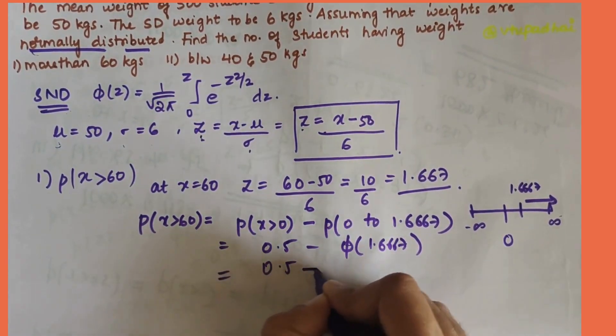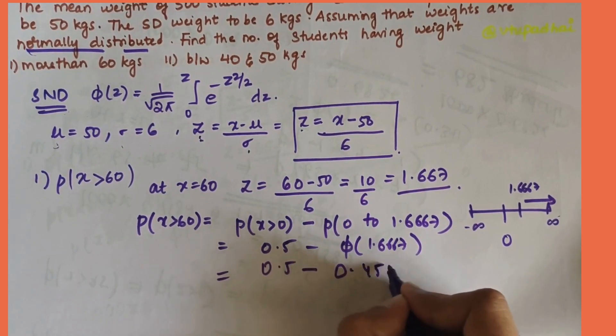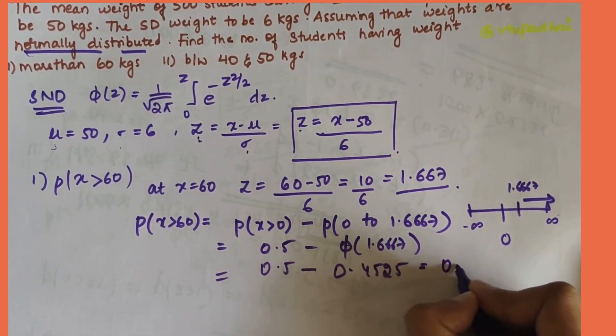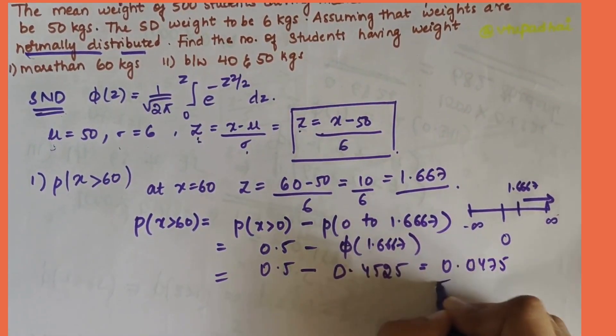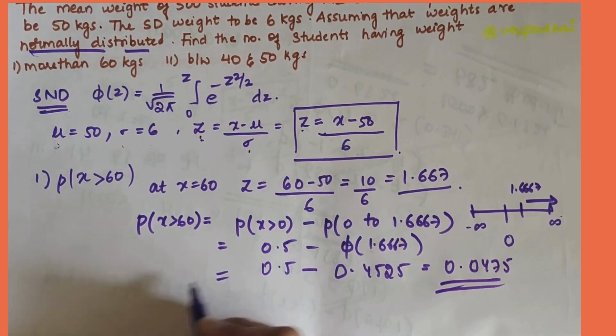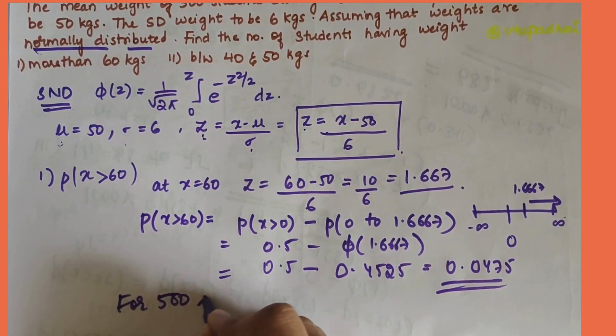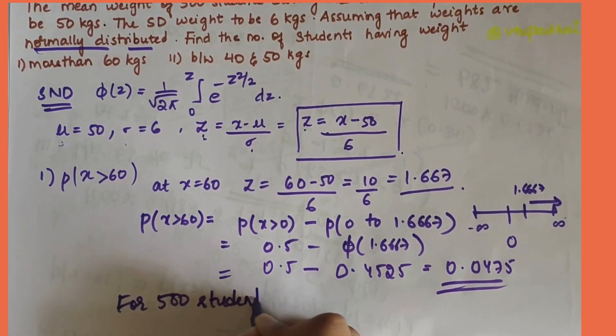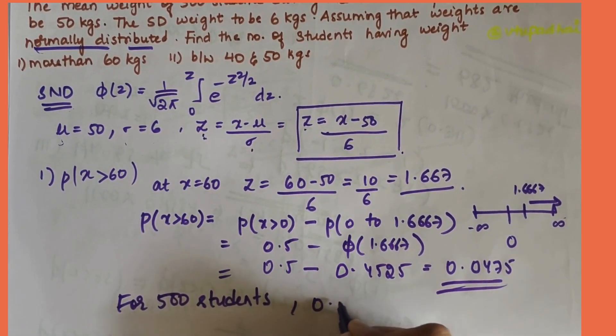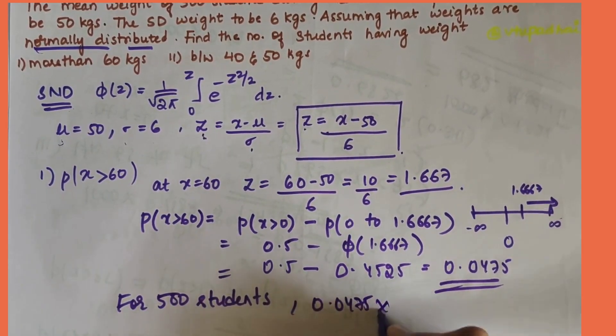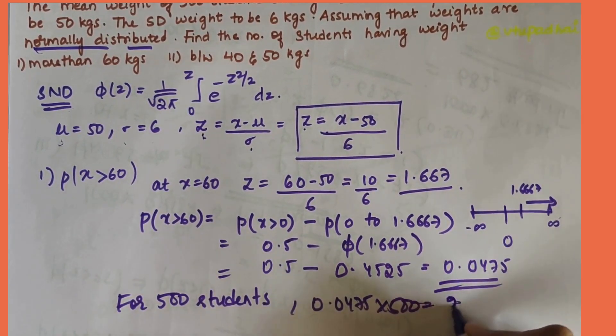0.5 minus 0.4525, answer would be 0.0475. This is for one student. For 500 students it would be 0.0475 into 500, that is 24.